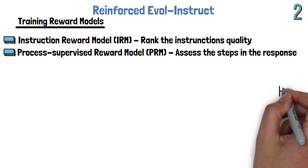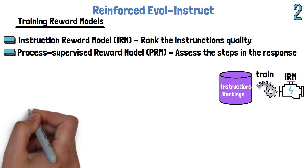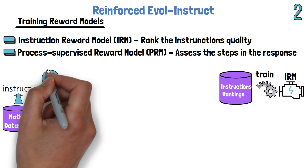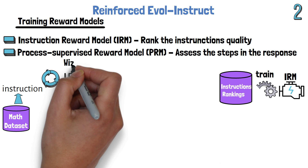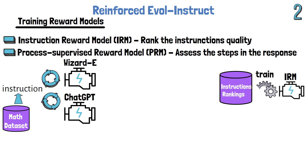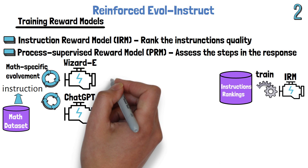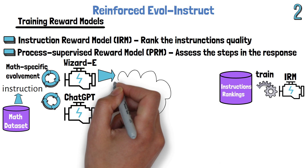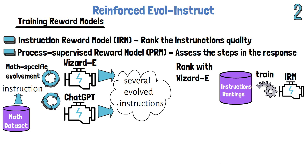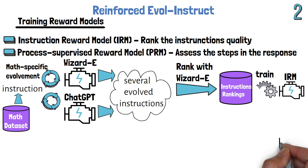How do we create these reward models? To create the Instruction Reward Model, we create an instructions ranking dataset. We start from the math dataset created in step 1, and for each instruction in the dataset we evolve it to generate a few evolved instructions using the EvolInstruct method, where we use both WizardE and ChatGPT as the models that evolve the instructions. WizardE is a model that was fine-tuned specifically to execute EvolInstruct. An important note is that the instruction evolution uses new math-specific evolvement prompts. We then rank the generated instructions using WizardE and add them with their rankings to the instruction ranking dataset used to train the IRM.